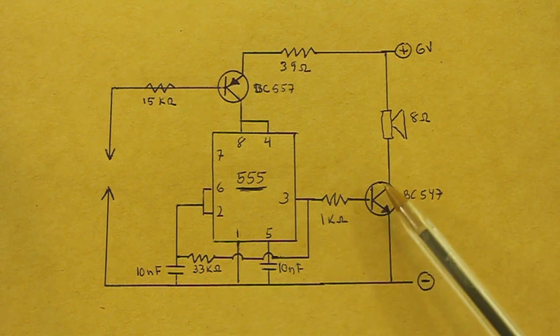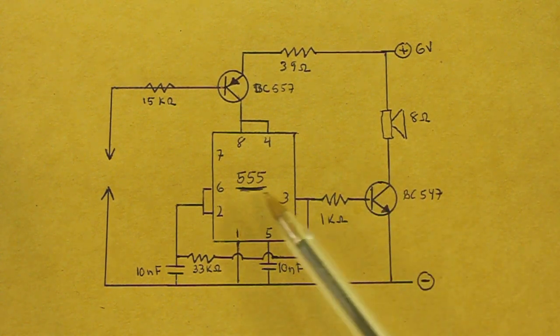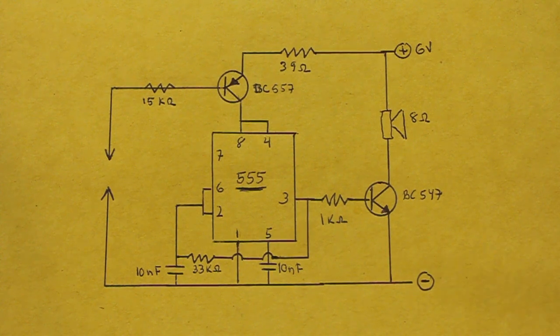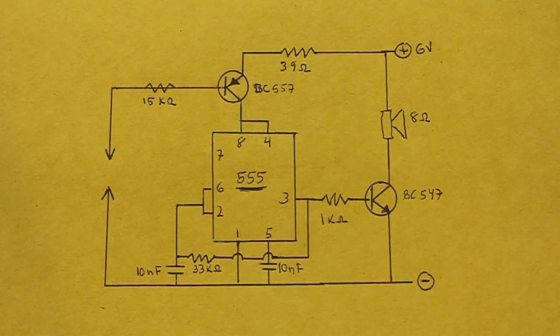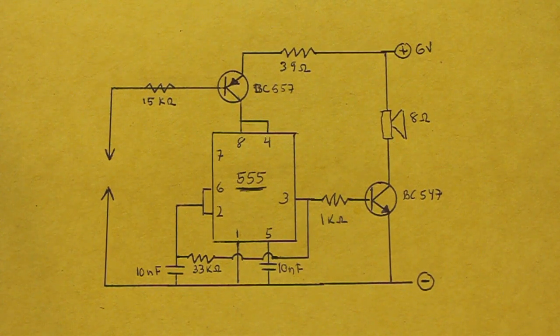This other transistor is only there to amplify the output of pin 3, which is too small to operate the speaker. Let's now see the circuit working.